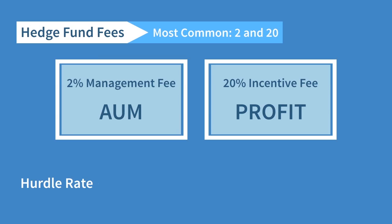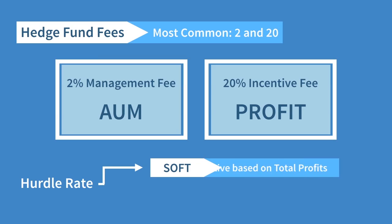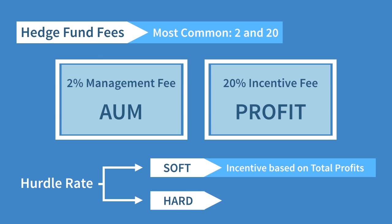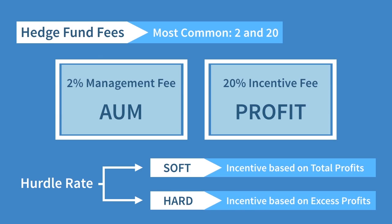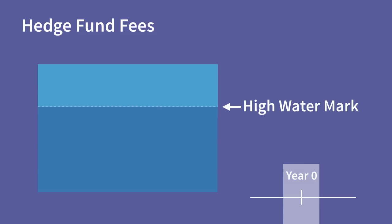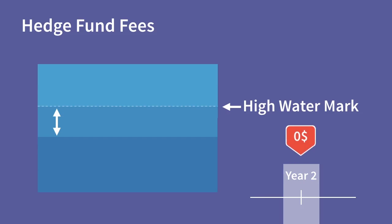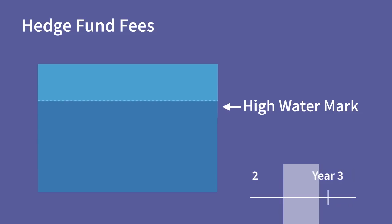A hurdle rate is a performance target, generally a benchmark return, which decides whether or not the manager has earned their incentive fee. If the benchmark is not beaten, the incentive fee is not paid. With a soft hurdle rate, the incentive fee is paid on all profits once the target has been beaten. With a hard hurdle rate, the incentive fee is only paid as a percentage of the profits above the amount of the hurdle rate. With a high watermark, the incentive fee is only paid in years where the fund has grown beyond its last highest value. So if the fund loses money in a given year, the incentive fee will not be paid, and in the next year, if the manager doesn't recoup those losses, the incentive fee will not be paid again until the size of the fund grows past its high watermark.